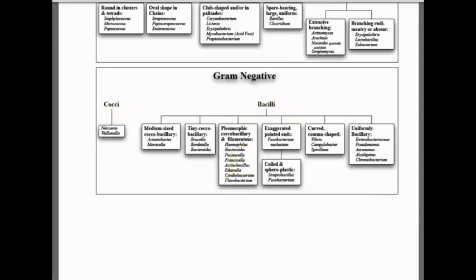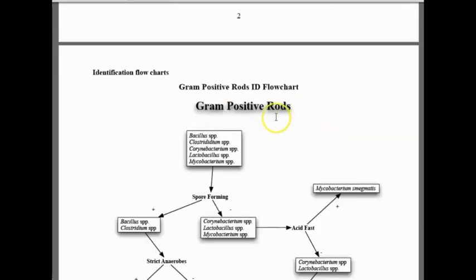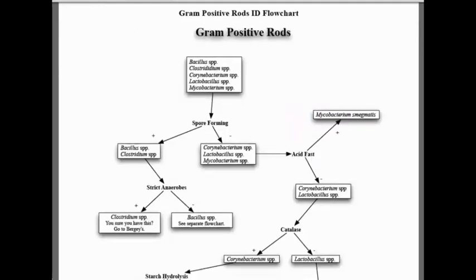And here is the summarization of one group: gram-positive rods — Bacillus, Clostridium, Corynebacterium, Bacterium, and Mycobacterium — which differentiates this group. These five species are divided into two groups depending on their performance in tests.